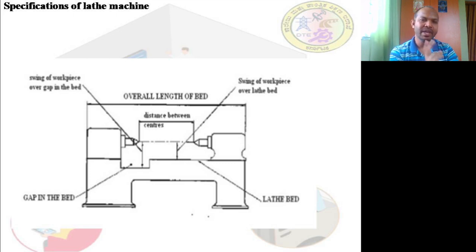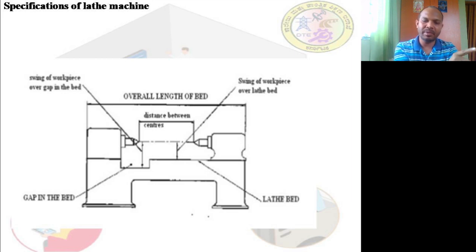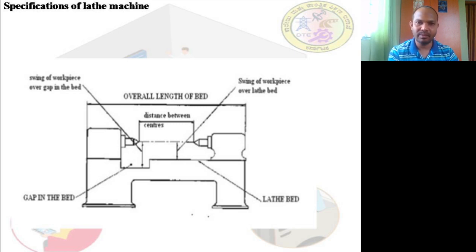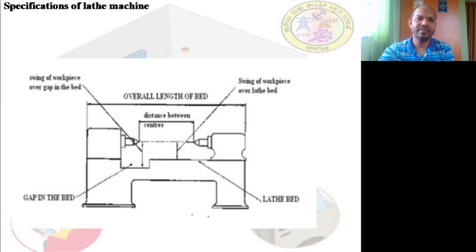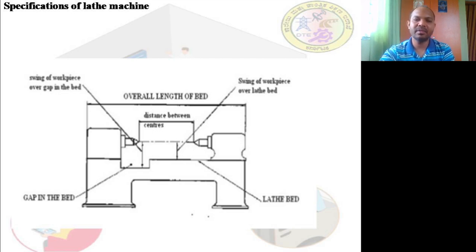The lathe has only two degrees of freedom — material removal takes place with respect to two axes: the X-axis and the Z-axis. When it comes to drilling and milling processes, there are three degrees of freedom — the tool can move in three axes: X, Y, and Z. Whereas in a lathe operation, you only have two degrees of freedom: the X direction and the Z direction.